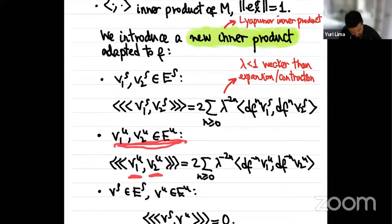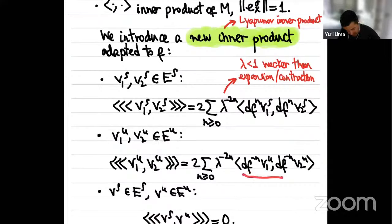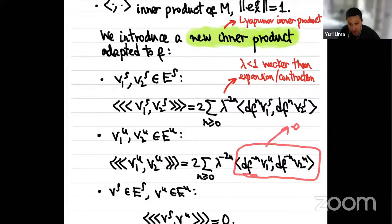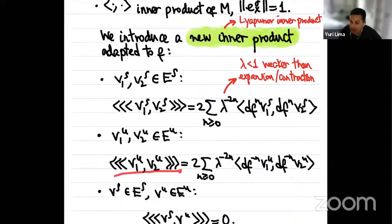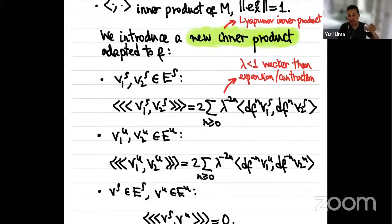We complement this by making the two sub-bundles ES and EU orthogonal. This new inner product — an adapted metric — is nicer from a dynamical point of view because with respect to this metric the action of the derivative of the map in the stable and unstable directions is uniformly hyperbolic without any extra constant. The norm of DF applied to a stable vector is genuinely smaller than lambda times the norm of the vector, and similarly for DF-inverse on unstable vectors.